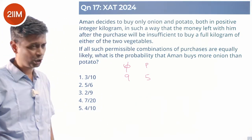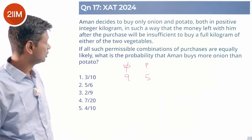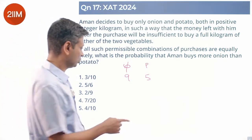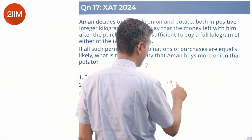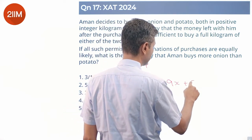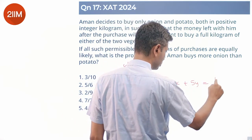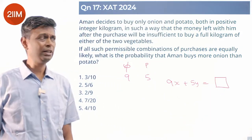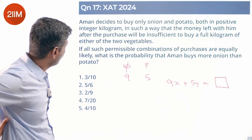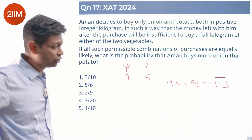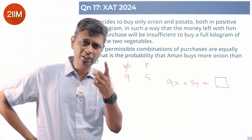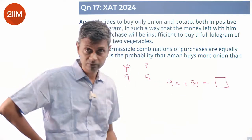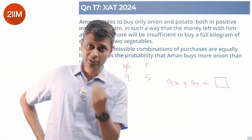So 9x plus 5y is what he spends. With the remaining money, he cannot buy a full kilogram of either vegetable — he cannot buy one kg of onion, and he cannot buy even one kg of potato, which is cheaper. He has 100 rupees to start with.